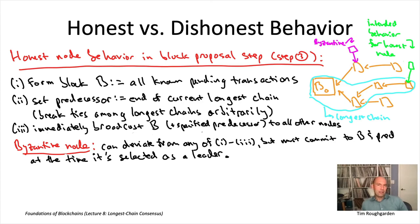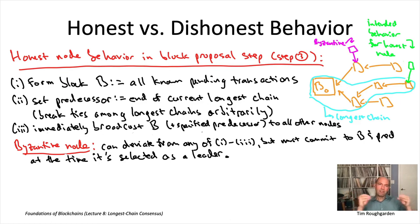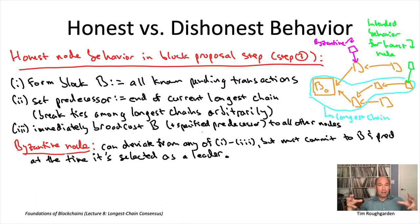Deviations from the second point — extending something other than the longest chain — should be immediately worrying and will play a big role in this lecture. Honest nodes are trying to coordinate on a single longest chain; if everyone's honest, the chain just keeps getting longer. But if Byzantine nodes extend something other than the longest chain, that creates problems we need to address.